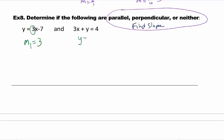My second one, subtract 3x to the other side, and so my slope for my second one is negative 3. These do not exactly match, which means they're not parallel. If I multiply 3 times negative 3, I get negative 9. So my answer here is neither.